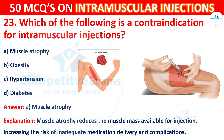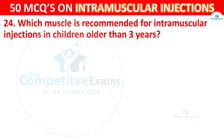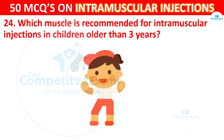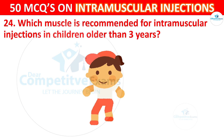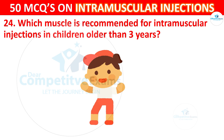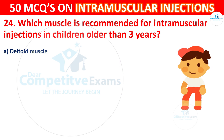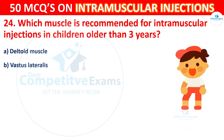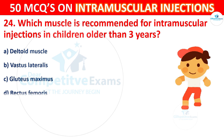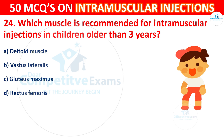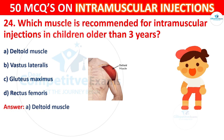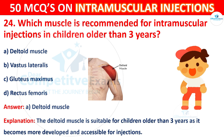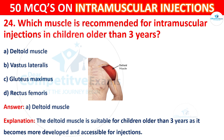Question 24: Which muscle is recommended for intramuscular injection in children older than 3 years? The correct answer is A, deltoid muscle. The deltoid muscle is suitable for children older than 3 years as it becomes more developed and accessible for injection.